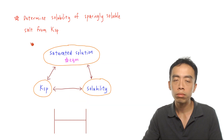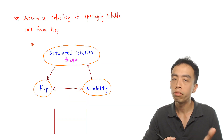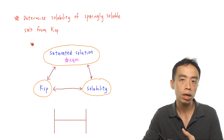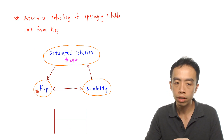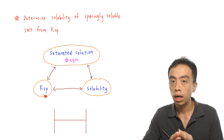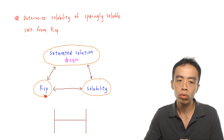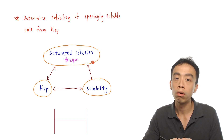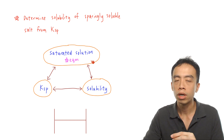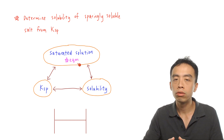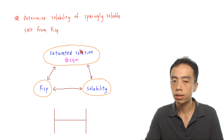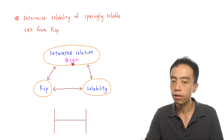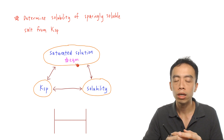The first thing we want to establish is the relationship between solubility product and solubility. For both solubility product, Ksp, and solubility, they are related to a saturated solution of a sparingly soluble salt. Why must the solution be saturated? It is because only when the solution is saturated, then the system is at equilibrium.